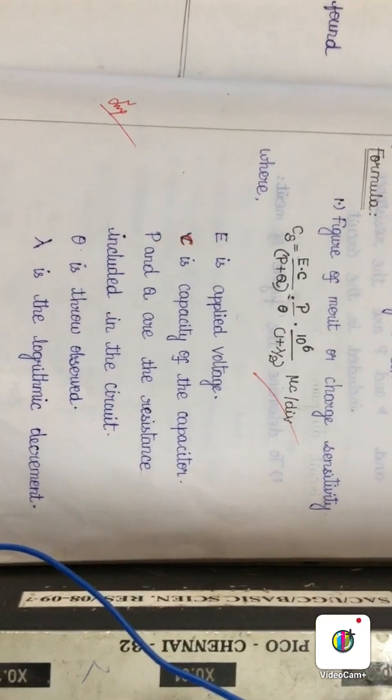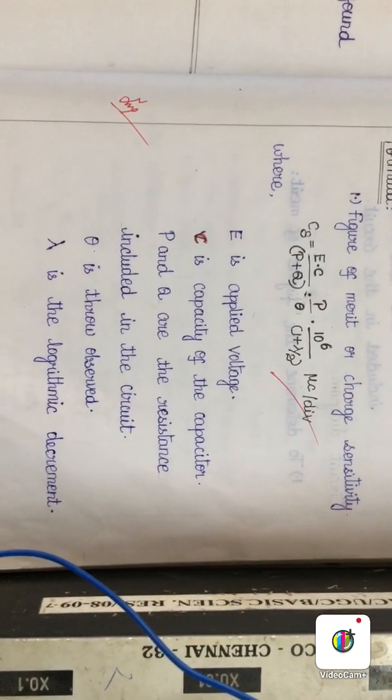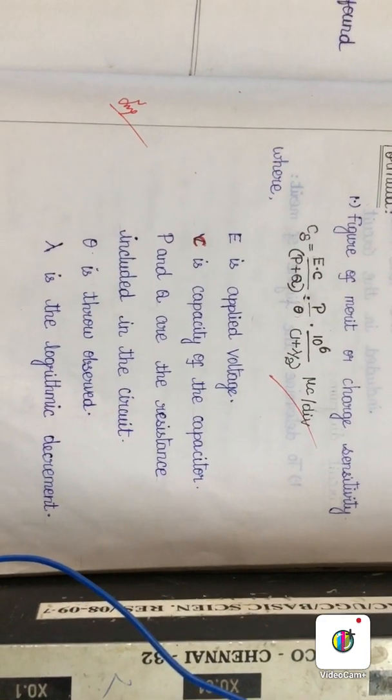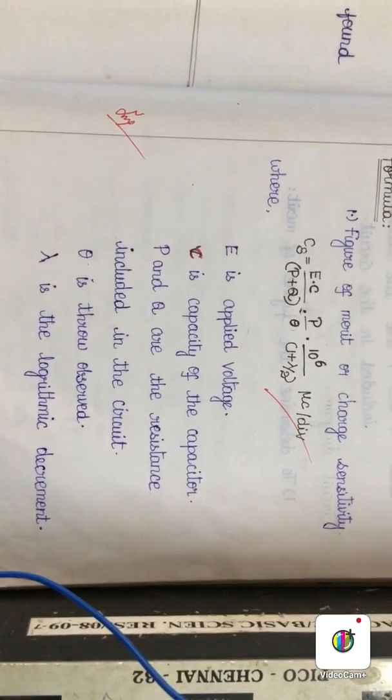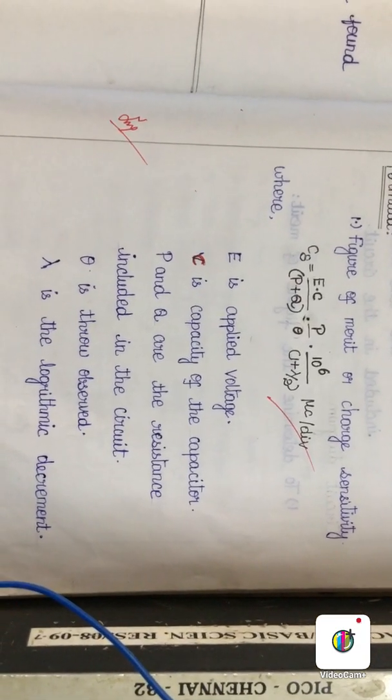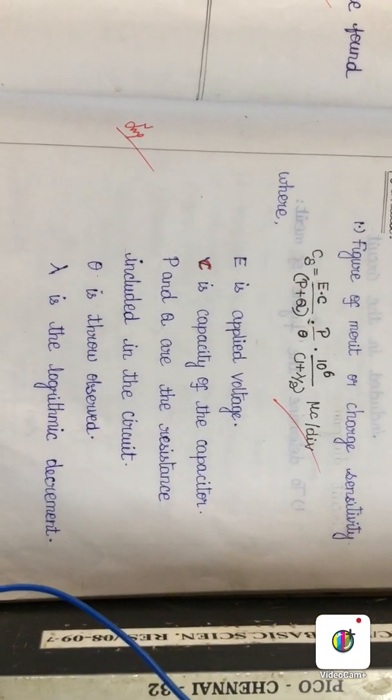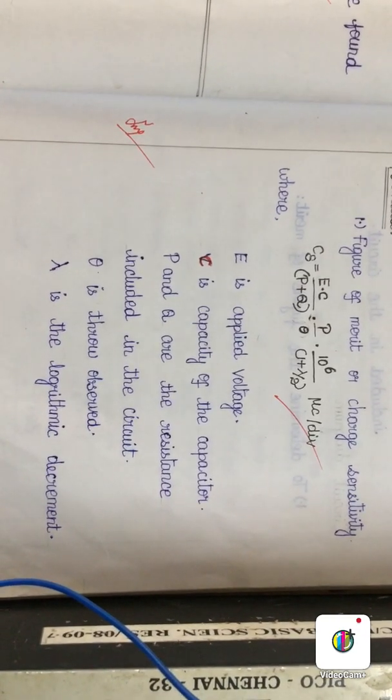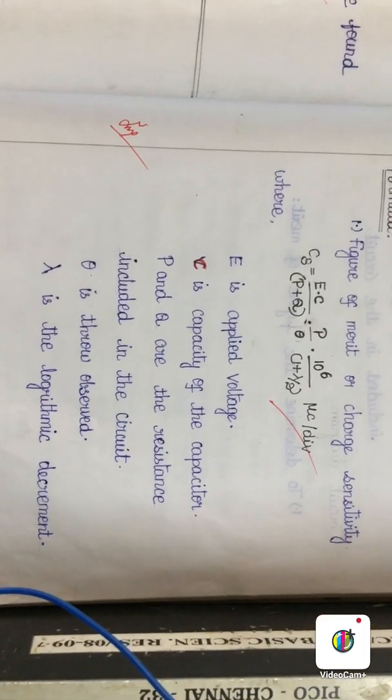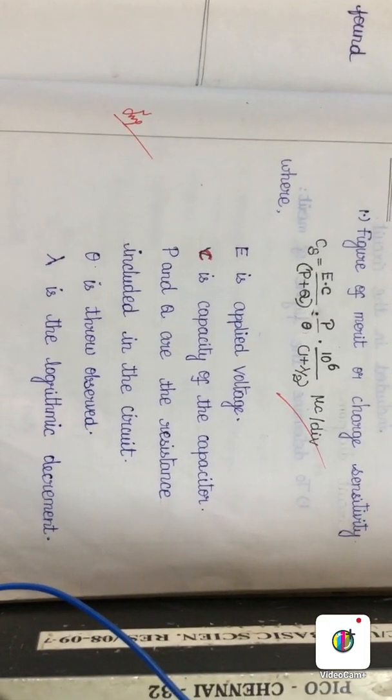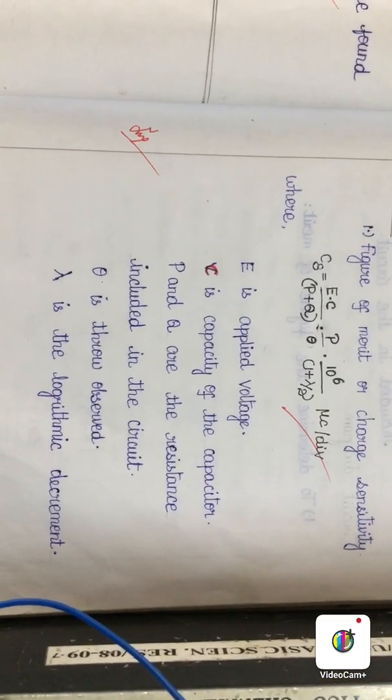To measure the charge sensitivity Cs, we need to measure the applied voltages in the circuit. E refers to the EMF, C refers to the capacity of the capacitor, P and Q are the resistances in the variable resistance boxes included in the circuit, theta is the throw observed, and lambda is the logarithmic decrement which we are going to measure.